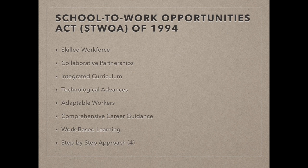The School to Work Opportunities Act of 1994 was created to help create a highly skilled workforce. The seven main goals that fit into this act now pretty much fit into the Perkins Act in some form. They are: collaborative partnerships, integrated curriculum, technological advances, adaptable workers, comprehensive career guidance, work-based learning, and a step-by-step approach. This act is no longer in place — it expired in 2001 — but since then there has been a demand for a program like this to come back.